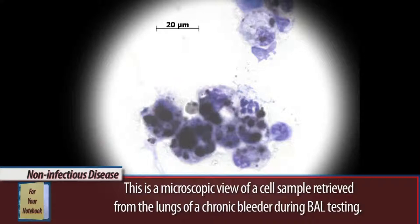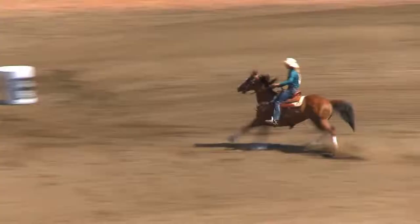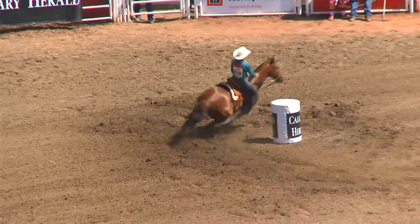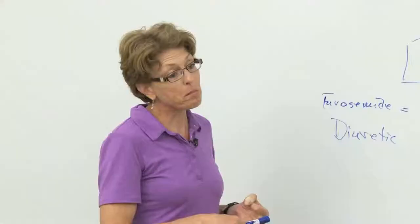But we do see it. We see it in polo ponies, but only high gold polo ponies. We see it in fast barrel racing horses. We see it in very good cross-country horses. But we don't see it in horses that go at slower speeds.